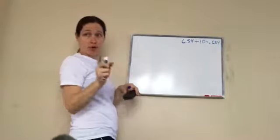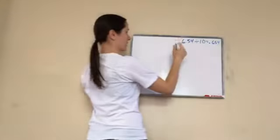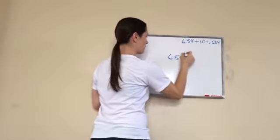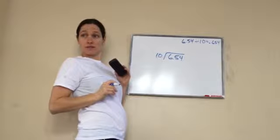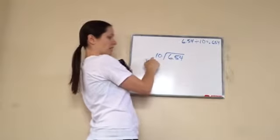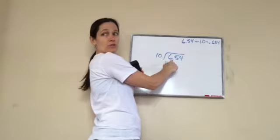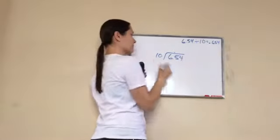And we got 0.654. Now I'm actually going to do that problem, not mentally. Ready? 6.54 divided by 10. What would I do? There's not a decimal here. So what do I do with this decimal? Move it up. Bring it up.